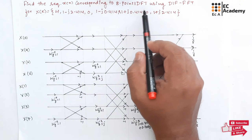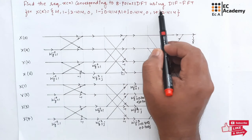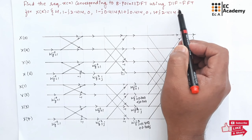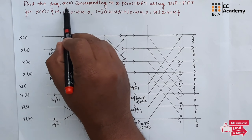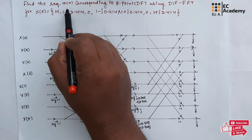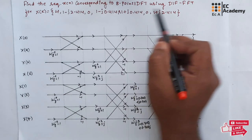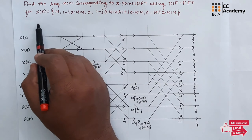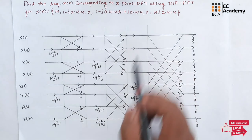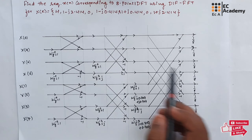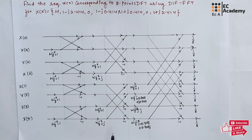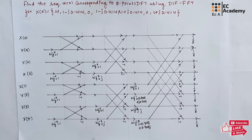In this lecture, let us understand the problem to find IDFT using DIF FFT. We need to find the sequence x of n using DIF FFT for the given sequence x of k. Before solving the problem, we need to write the standard 8-point DIF FFT flow graph as shown here.